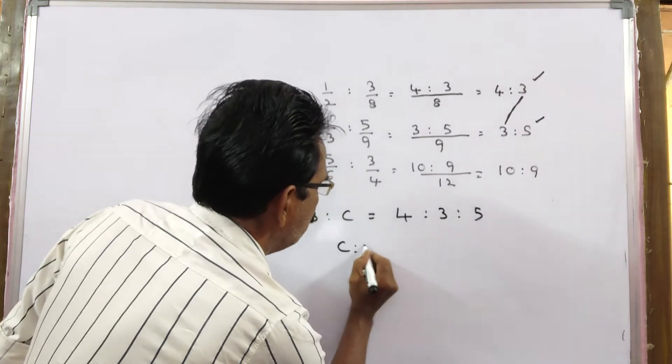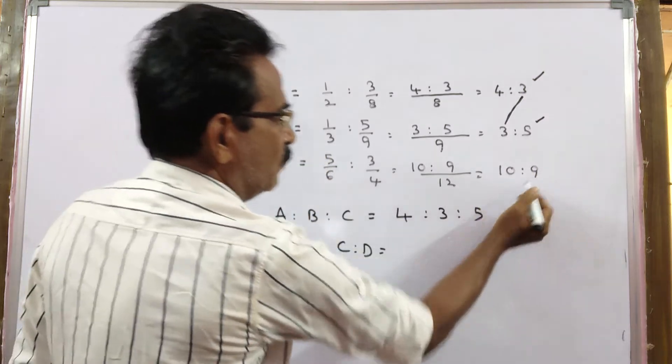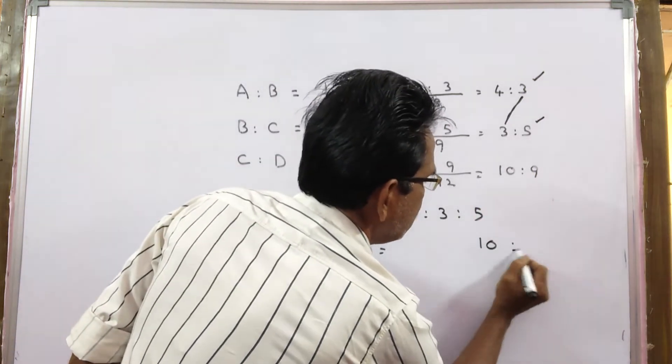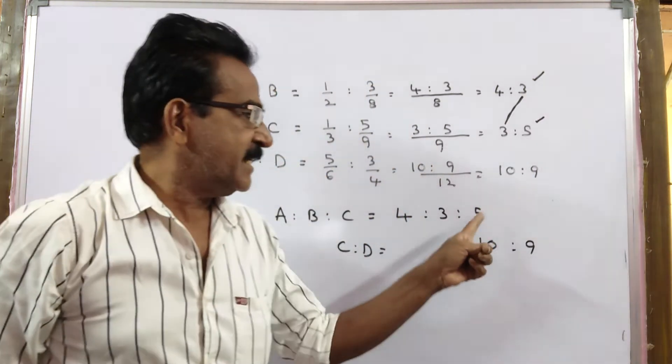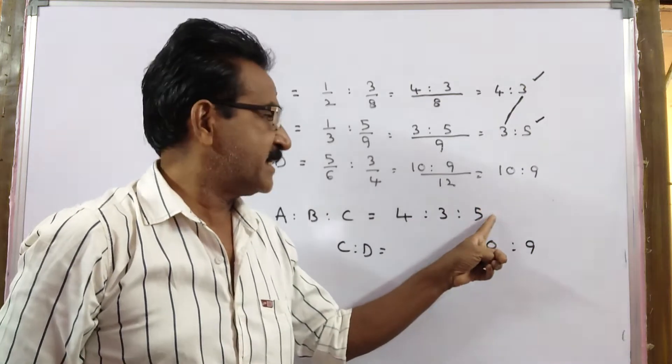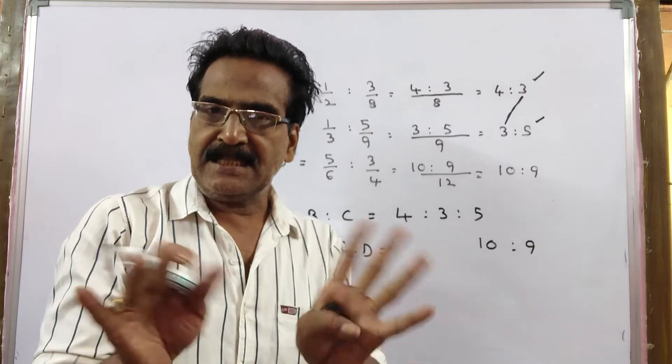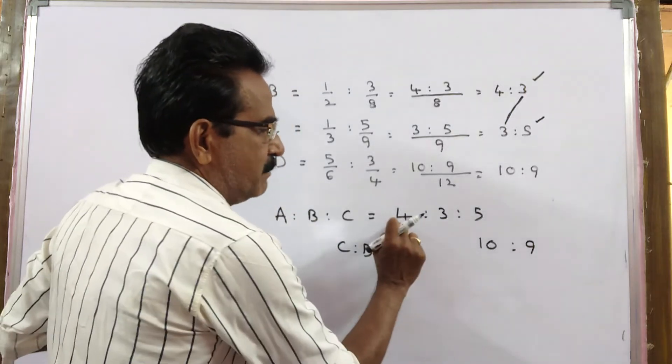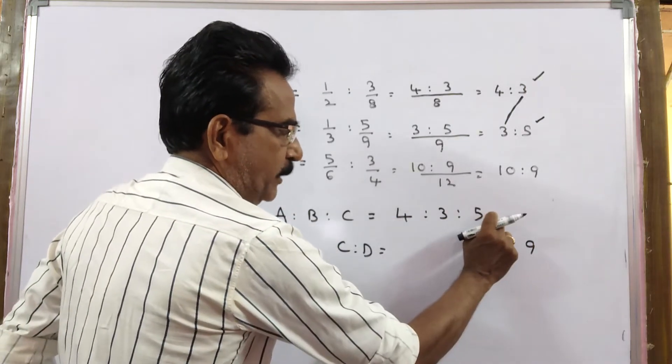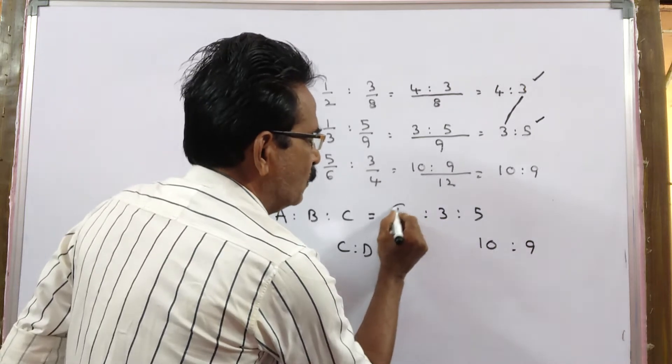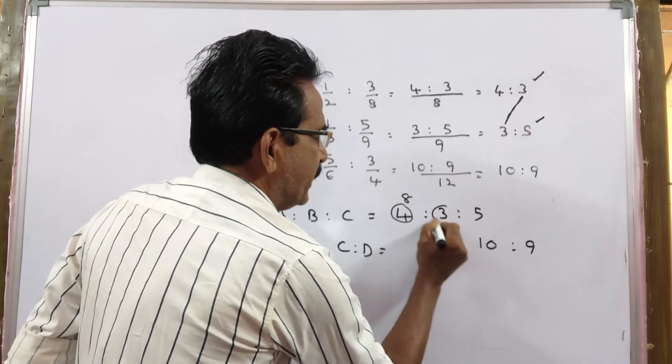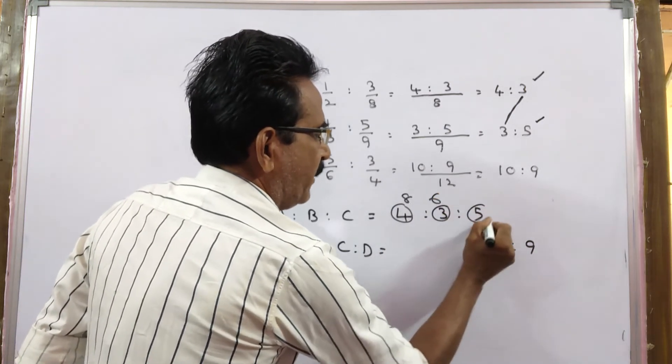Now C is to D, C is to D is equal to 10 is to 9. Here C terms are not equal, here C is 5, here C is 10. So let us make C terms equal, let us multiply this ratio by 2. So 2 4's 8, 2 3 is 6, 2 5 is 10.